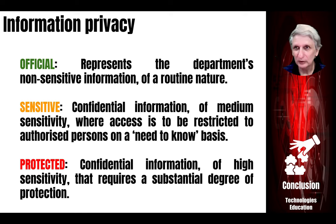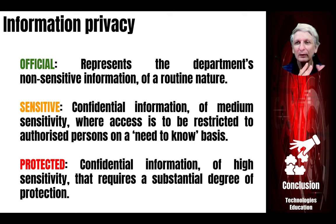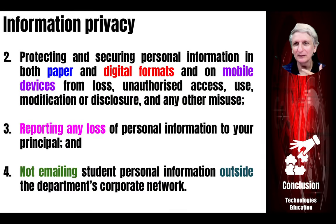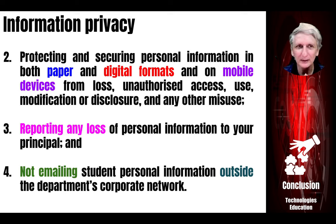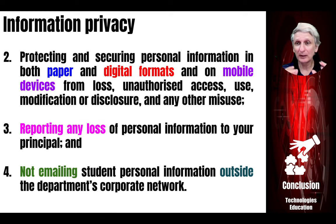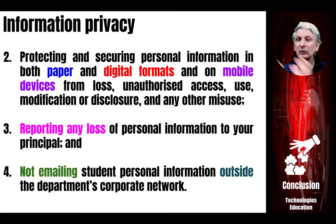Examples of protected information include passwords, tax file numbers — things that Optus shares quite readily. You need to identify what level of security your collected information needs to be classified as, because that will relate to how it's stored, when it has to be destroyed, and a whole range of other processes. You have to make sure it protects both paper formats, any digital formats including photographs, and any devices it may be stored on — mobile phones, laptops, or digital cameras.